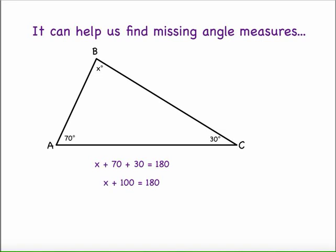In this case, I would combine like terms and subtract both sides or subtract 100 from both sides. Or I could say I have 180 degrees, subtract 70 and subtract 30, which would leave me 80 degrees left over. Either way, I'm going to get a missing angle measure, the measure of angle B of 80 degrees.